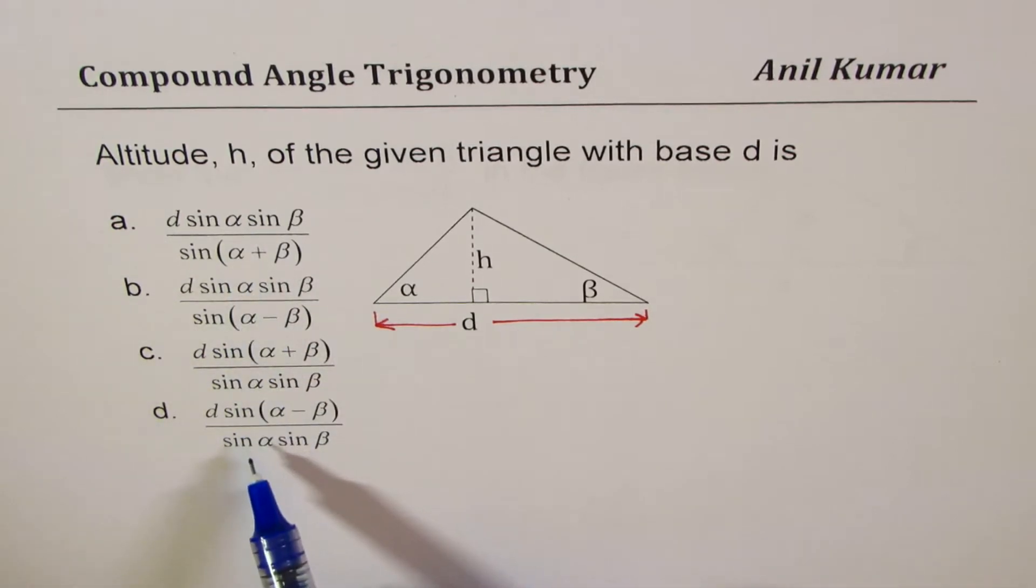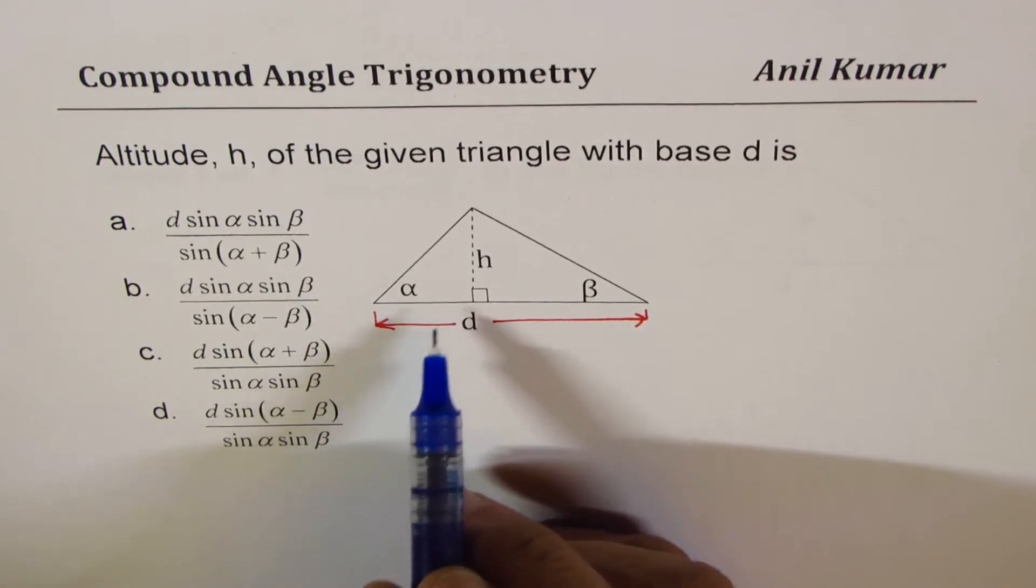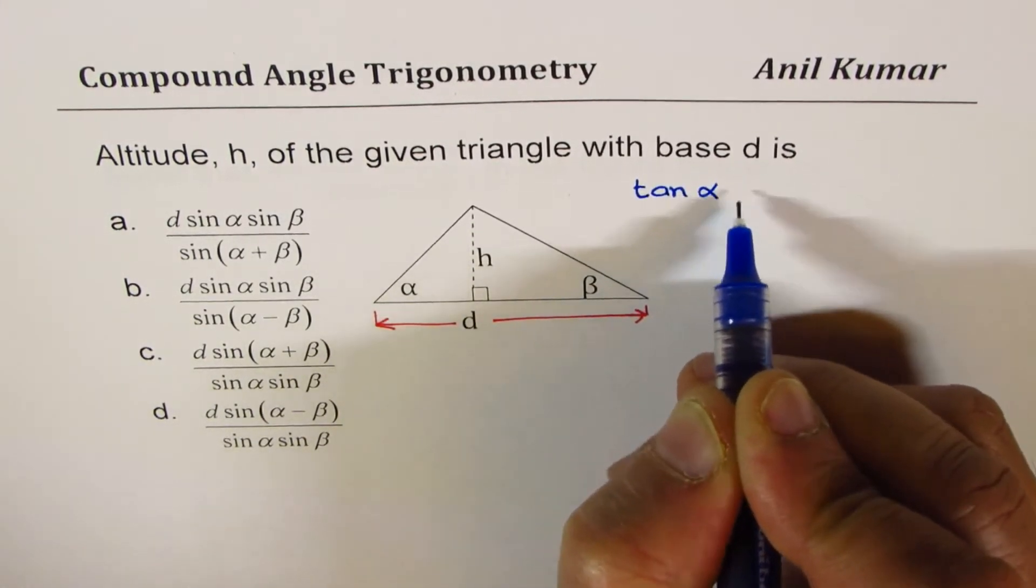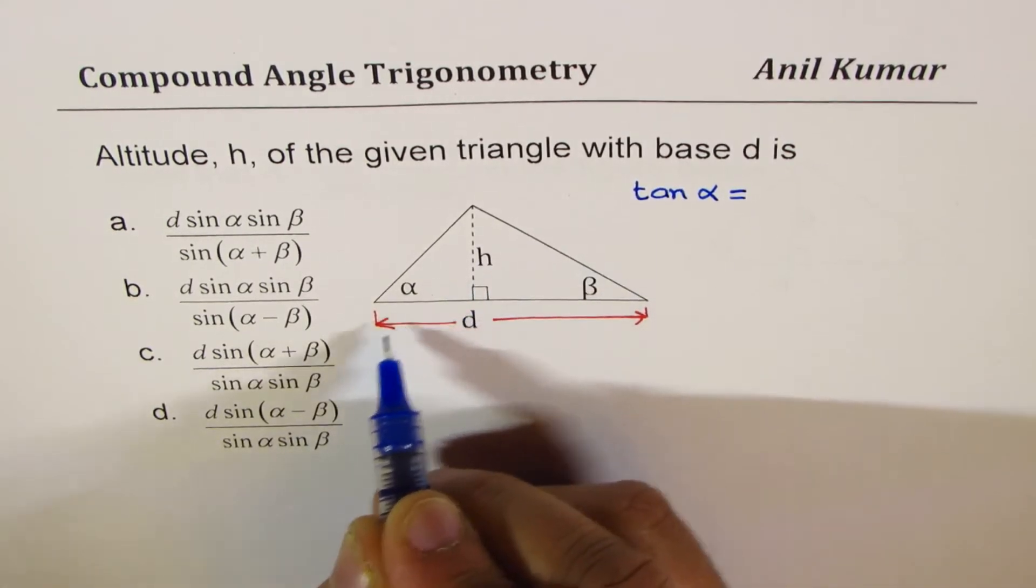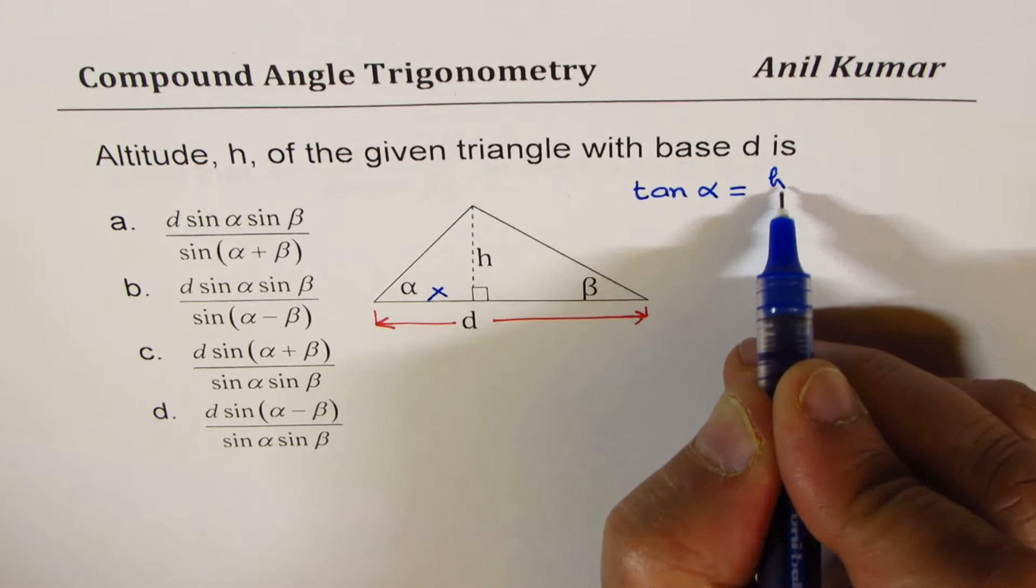To solve this, let's see. We can start with this α triangle and we can say what is tan α equals to. So tan α equals h over - let us say this side is x - so h over x. And we can write tan β as equal to h over, if this is x then that becomes d minus x.